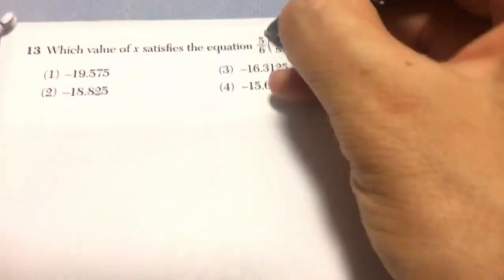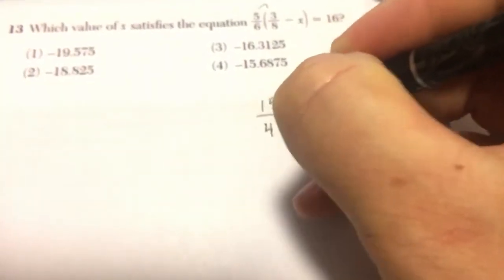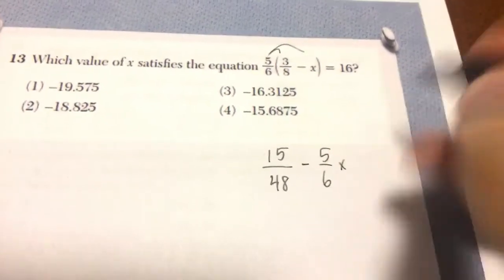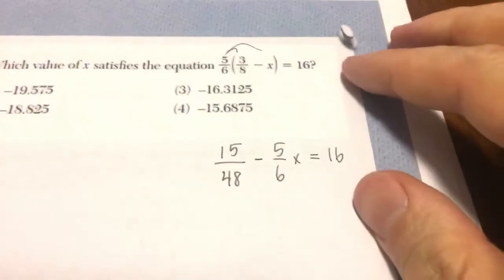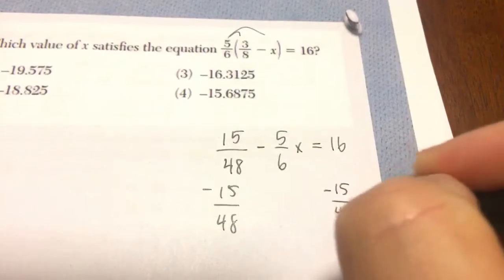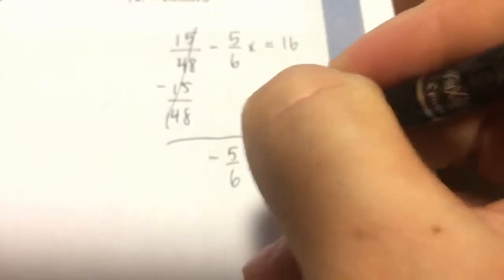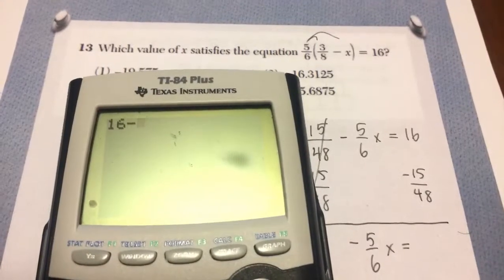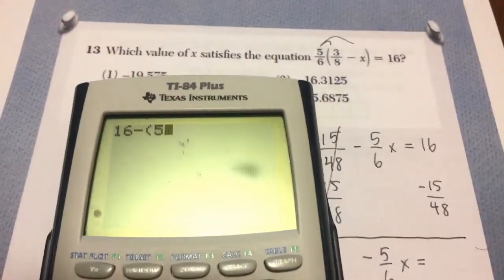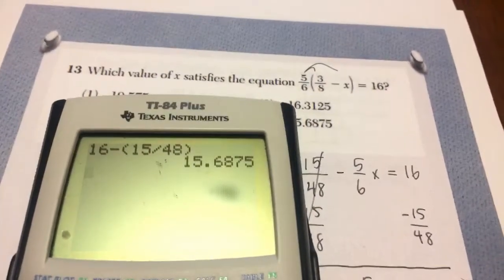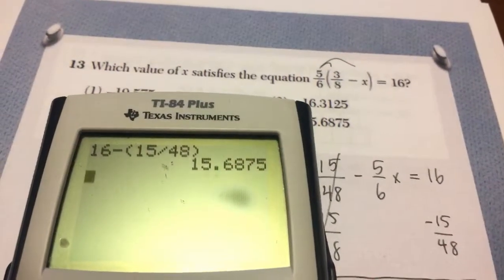Number 13, if I distribute I get 15 48ths minus 5/6x equals 16. Now I am going to use my calculator to help me with this. Now if we're going to do 16 minus 15 48ths, make sure you put parentheses around your fraction. Okay, so I get 15.6875.